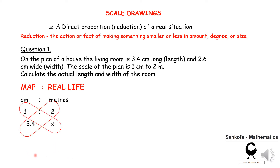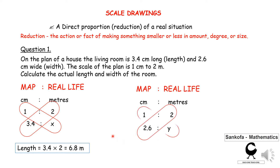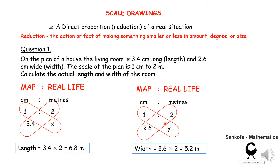So it's direct proportion, and you can do cross multiplication. As one increases, so does the other one; as one decreases, so does the other one. The bottom line is you should get 6.8 — that's the length of the room. For the width, you use the same scale. You just put the 2.6 centimeters under there, cross multiply, and you should get 5.2 meters, whatever method you are using.